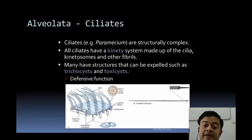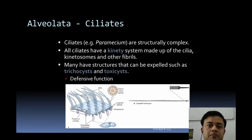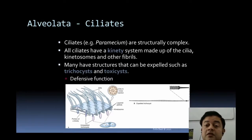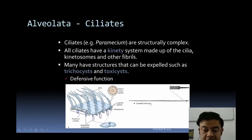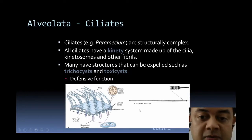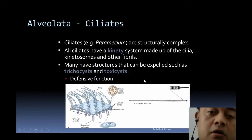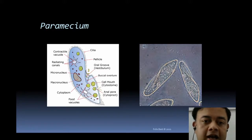Ciliates such as Paramecium are structurally complex. All ciliates have a kineties system made up of cilia, kinetosomes, and other fibrils arranged with microtubules. Many also have structures that can be expelled, such as trichocysts or toxicysts — these function defensively, firing out like an arrow. The expelled trichocysts are visible under microscopy.